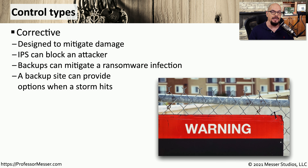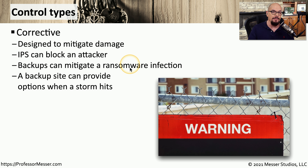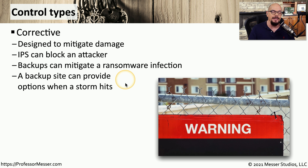A corrective control is designed to mitigate any damage that occurred because of a security event. For example, an IPS — an intrusion prevention system — can identify an attack on the network and block that traffic from entering. Or if devices on your site are infected with ransomware, you can correct that problem by restoring from a known good backup. On a larger scale, if a storm hits and power goes out, you can move everything over to a backup site and maintain uptime and availability through that corrective control.